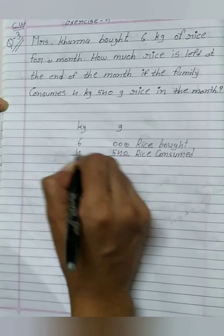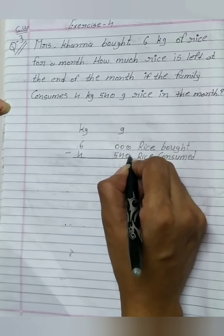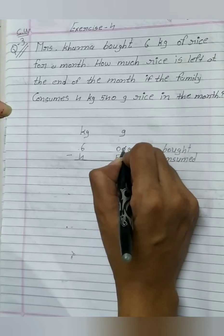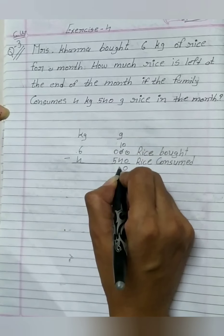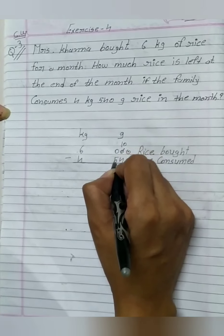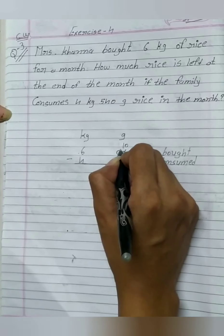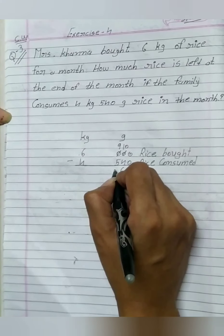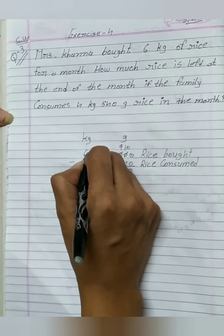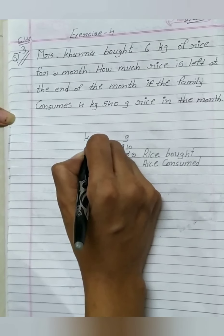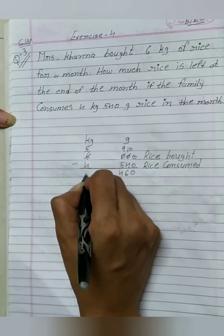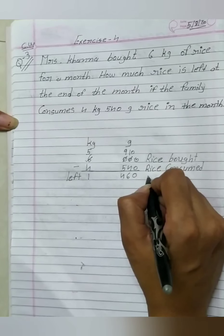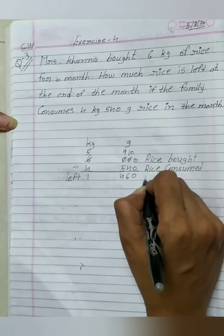So we do subtraction. Start from gram place. 0 minus 0 equal to 0. 0 minus 4 is not possible, so we take borrow in the next place. 10 minus 4 equal to 6. Now 0 minus 5 means we write 9. 9 minus 5 equal to 4. In the next place cut 1. 6 minus 1 equal to 5. 5 minus 4 equal to 1. So 1 kg 460 gram rice left over.